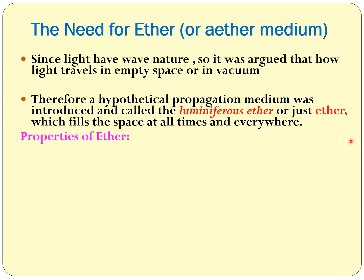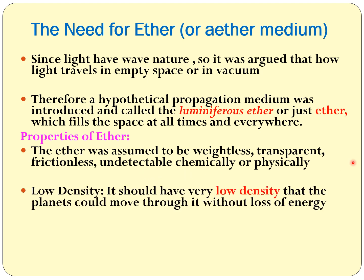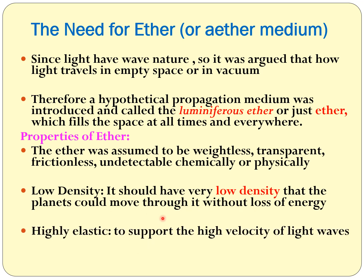The properties of ether were assumed to be: weightless, transparent, frictionless, and undetectable chemically or physically. It has very low density so that all the planets and everything move through it without loss of energy, and it is highly elastic — so even light, with its very high velocity, can pass through this ether.